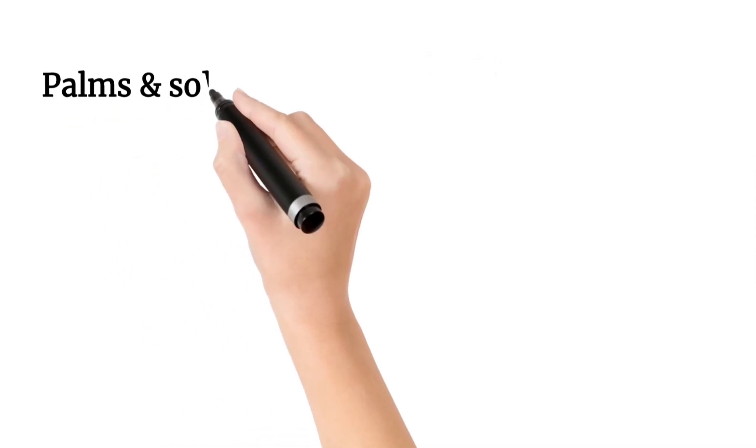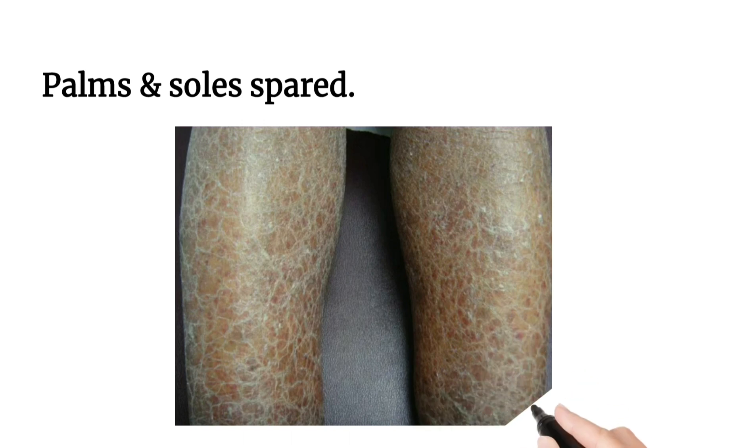Palms and soles are usually spared. This is the image showing characteristic scales on the shin.